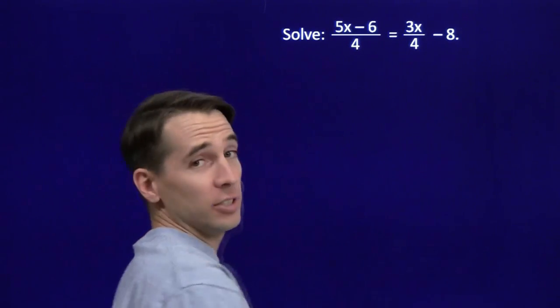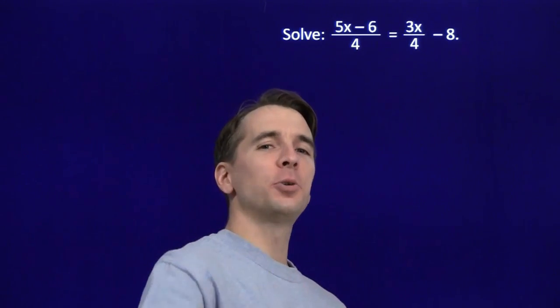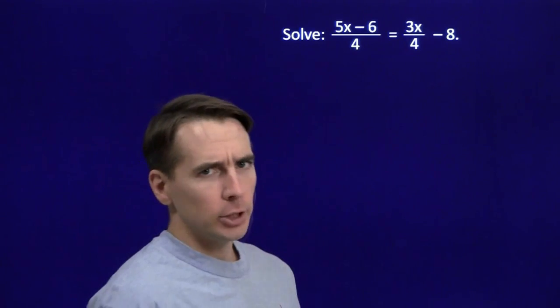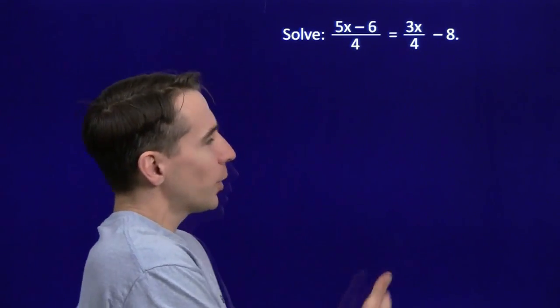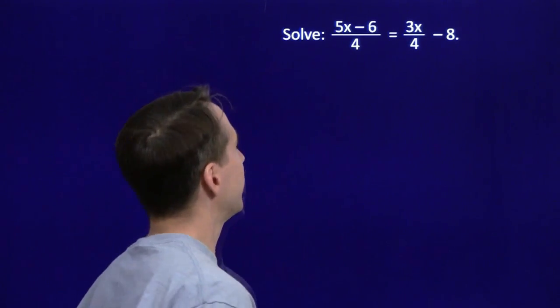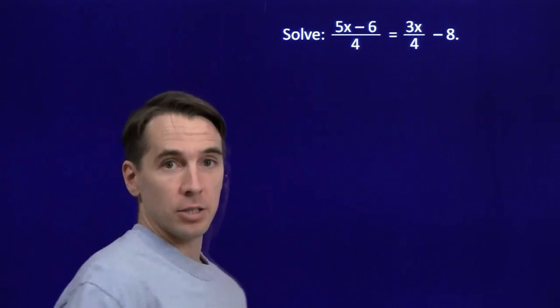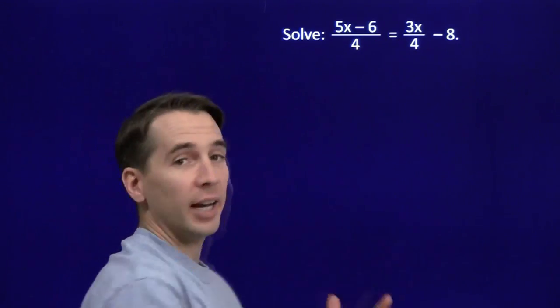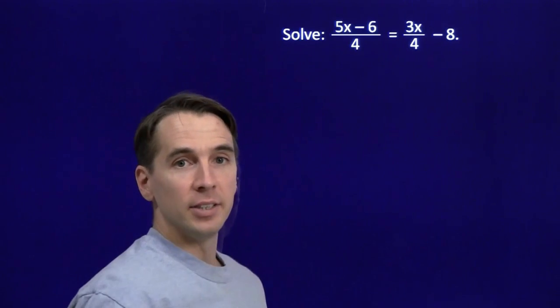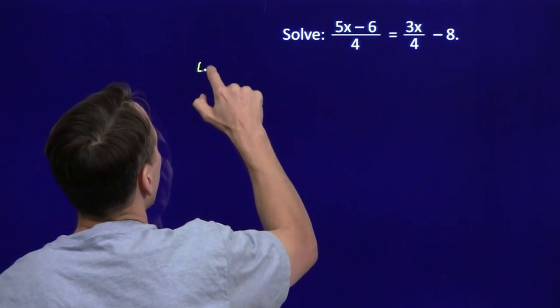I've got some more equations with fractions for you, because you could use the practice. And judging by how many takes I've needed to get this right, I could use the practice too. Well, we're going to break out that wipe out the fraction strategy. We're going to multiply both sides by 4 to knock out these denominators. Let's give that a shot.